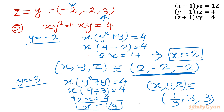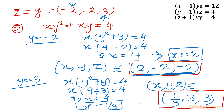So our final solutions are (x, y, z) = (2, −2, −2) and (x, y, z) = (1/3, 3, 3). I hope you liked this video. Thank you so much for watching — don't forget to like, share, and subscribe!